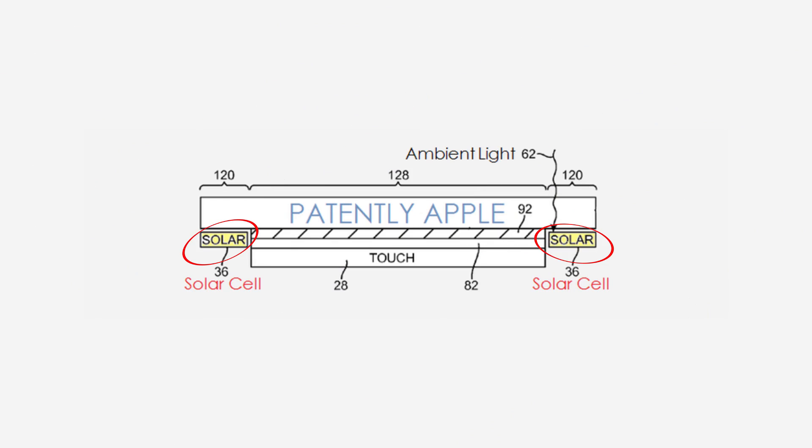What sort of things does PatentlyApple learn about technology developments at Apple? Here is one specific invention reported by the site. An Apple iPhone already has a light sensor and wireless communication capabilities. Why not replace the light sensor with a solar cell? That way, the extra electricity harvested from ambient light could be used to keep your battery topped up, and if you've already got a full charge, that excess electricity can be transmitted to other nearby devices. That's innovation on the page from Apple.